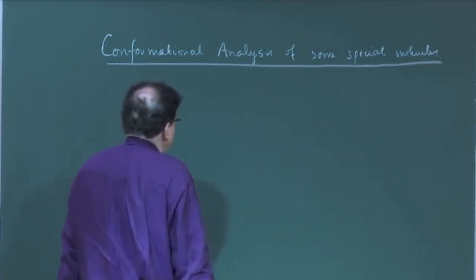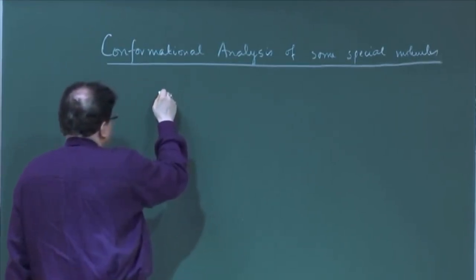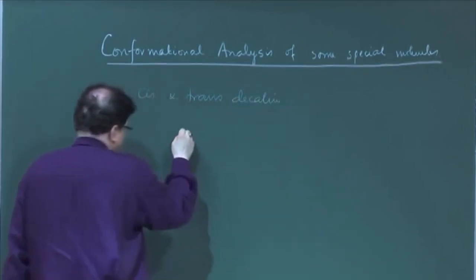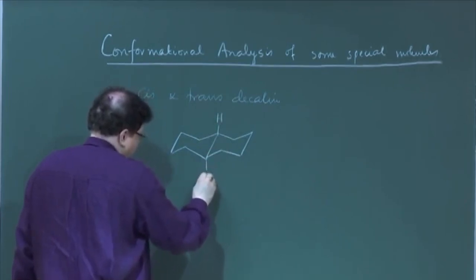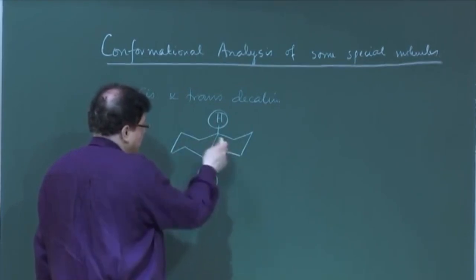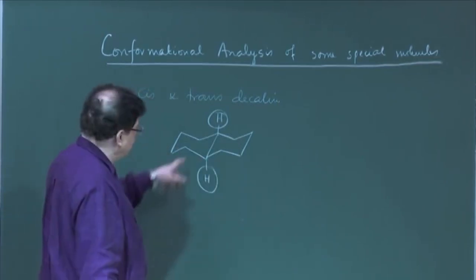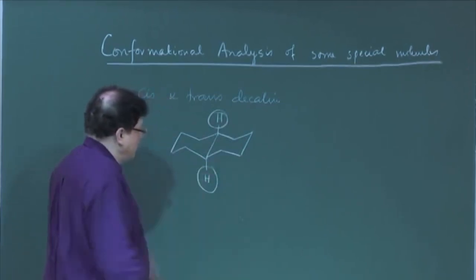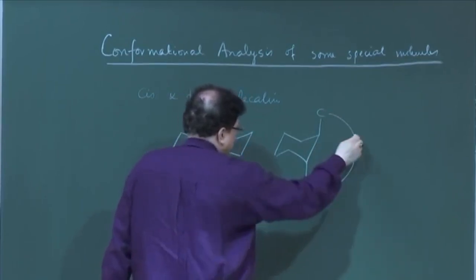Before going into these special molecules, let us have a quick revisit of what we covered last time. We were discussing the conformation analysis of cis and trans decaline, a bicyclic system. We have seen that the trans isomer is a rigid molecule which cannot be flipped, because the hydrogens at the ring junction have to be always in the axial position with respect to both rings. The ring bonds are equatorial, and if you want to flip, it is not possible to make a cyclohexane out of two axial carbons.